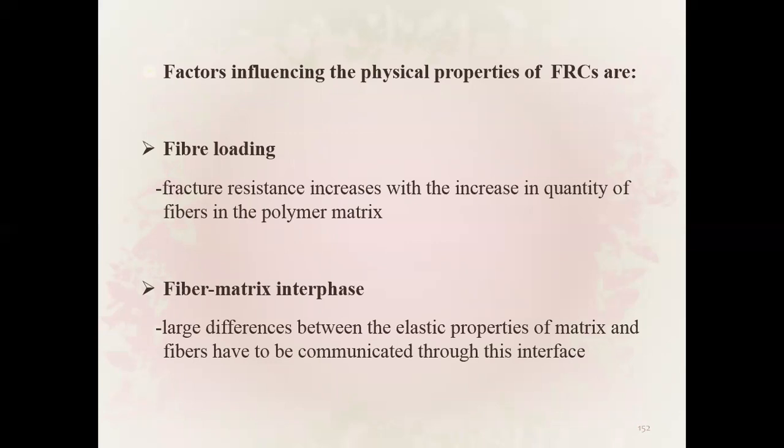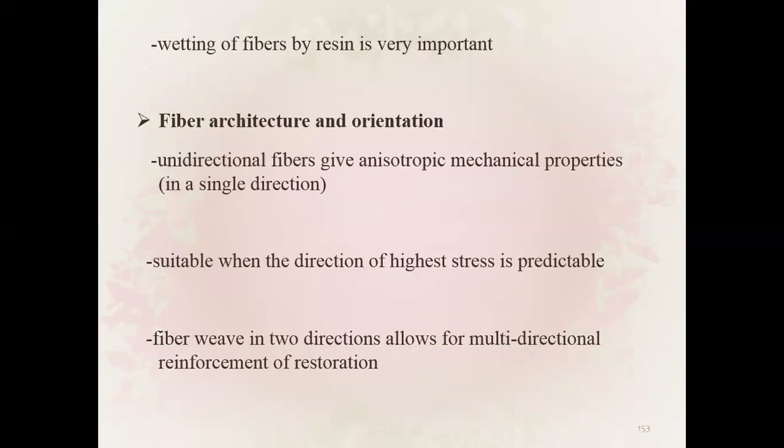Factors influencing physical properties of fiber reinforced composites: fiber loading — fracture resistance increases with increase in the quantity of fibers in the polymer matrix. Fiber-matrix interface — large differences between elastic properties of matrix and fibers must be communicated through this interface; wetting of fibers by resin is very important. Fiber architectural orientation — unidirectional fibers give anisotropic mechanical properties suitable when the direction of highest stress is predictable; fiber weave in two directions allows multi-directional reinforcement.